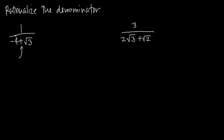So the negative 4 stays the same, and the square root of 3 stays the same. The only thing we change is the sign in between them. In this case, the sign is positive, so we change it to a negative. And we multiply the conjugate by both the numerator and the denominator — so we're going to multiply by negative 4 minus root 3 divided by negative 4 minus root 3.